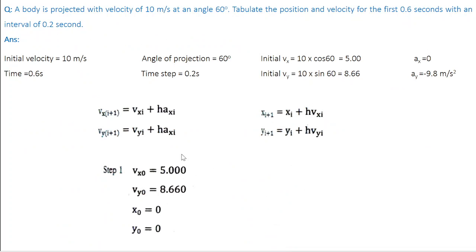Let us do a simple problem. A body is projected with velocity 10 m/s at an angle of 60 degrees. Tabulate the position and velocity for the first 0.6 seconds with an interval of 0.2 seconds. Let us write down all the parameters: initial velocity V0 equals 10 m/s, angle of projection theta equals 60 degrees, time is 0.6 seconds, time step h is 0.2 seconds, Ax equals 0, and Ay equals minus 9.8 m/s². The initial velocity components are Vx equals V0 cos theta, which is 10 cos 60 equals 5, and Vy equals V0 sin theta, which is 10 sin 60 equals 8.66.